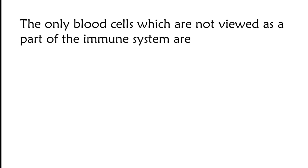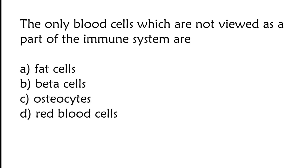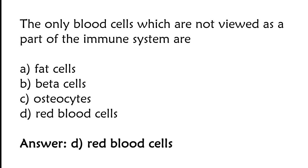The only blood cells which are not viewed as a part of the immune system are — options: phate cells, beta cells, osteocytes, red blood cells. The correct answer is option D. Red blood cells.